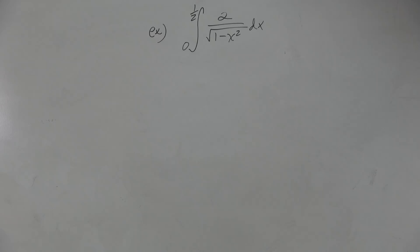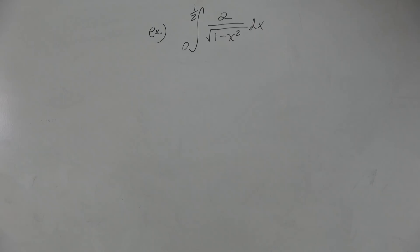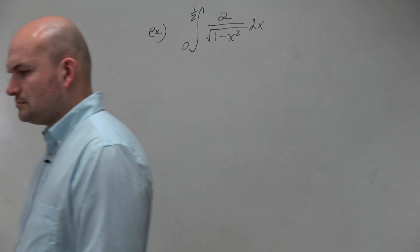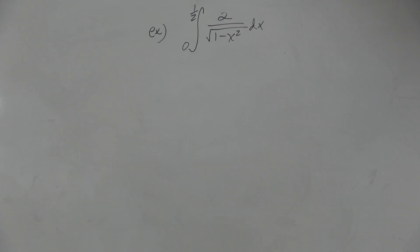Anybody remember arc sine? Where'd you get two arcs? It should just be two arcs — because it's just a constant. The one-half should be in front; it should be one-half minus here.